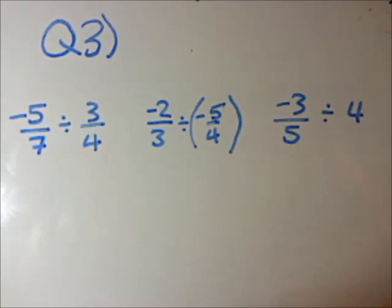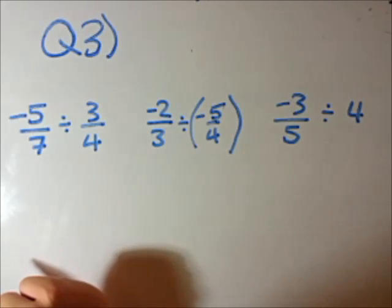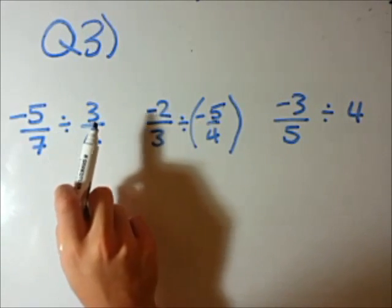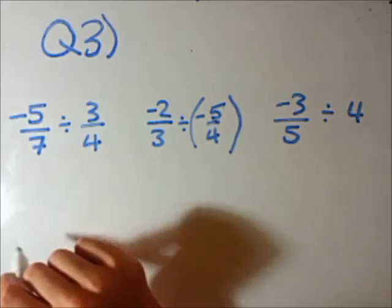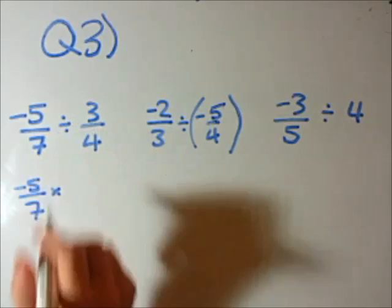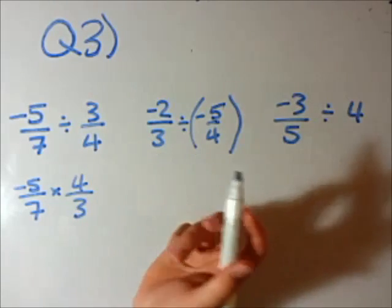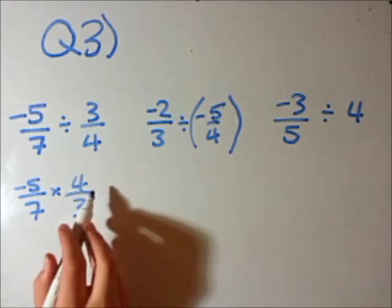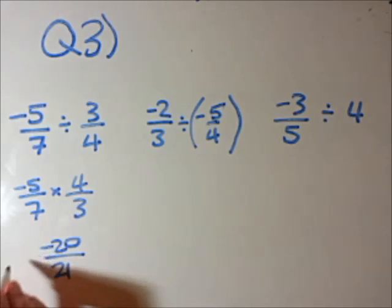Question 3. We are going to divide two fractions with some negative signs, similar to the previous video. Remember our golden rule when dividing fractions: it's very similar to multiplying, but we have to flip the second fraction. So we keep the first fraction, change the division to a multiplication sign, and flip the second one. Minus 5 times 4 is negative 20, divided by 21, and that is its simplest form.